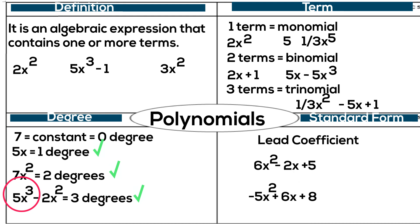Next, what does lead coefficient mean? A lead coefficient is a number at the front of a polynomial when it is in standard form. So let's look at the first polynomial in standard form. The lead coefficient is positive 6. The lead coefficient for the second polynomial is negative 5.